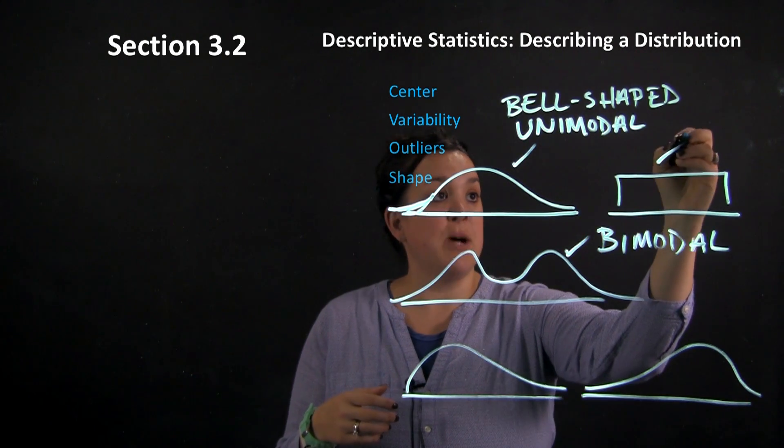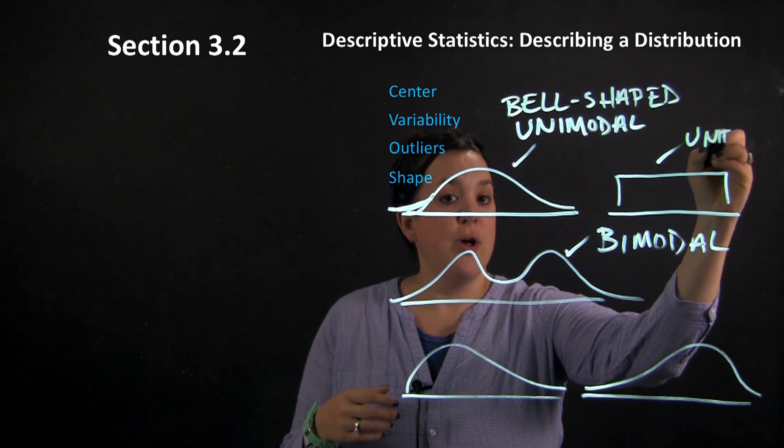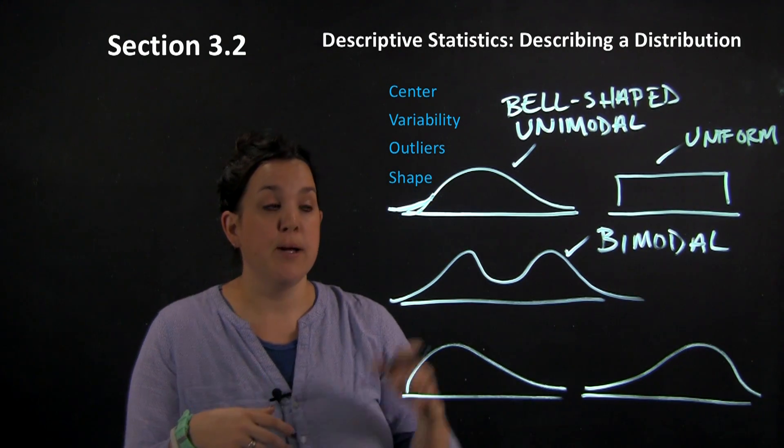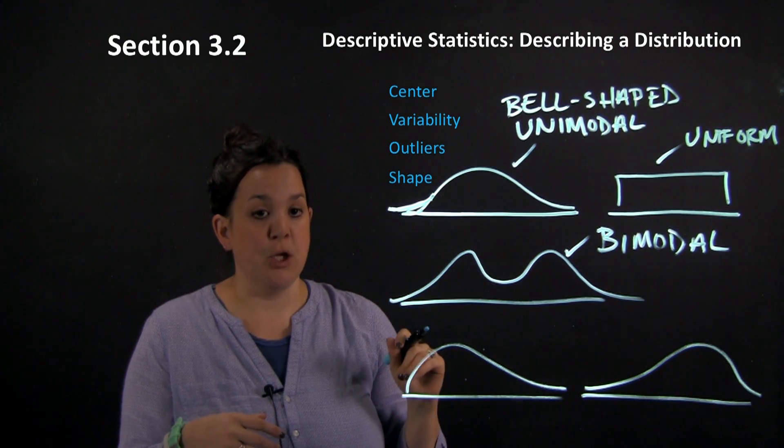This one is symmetric and it also is described as being uniform. When it has that rectangular shape, it's going to be described as being uniform.